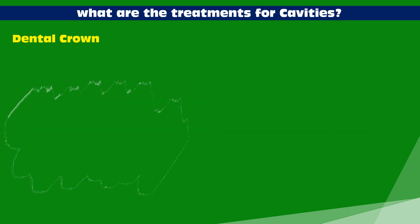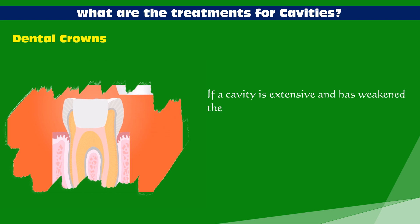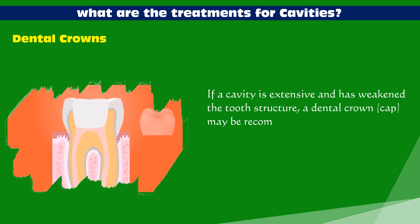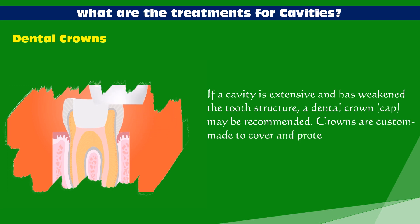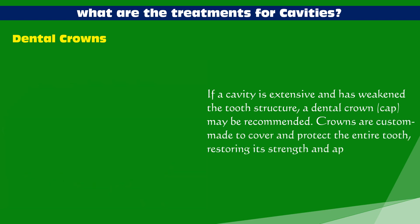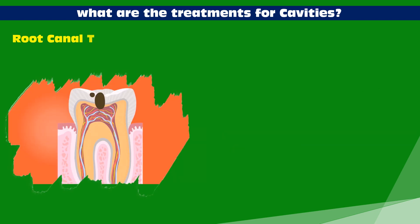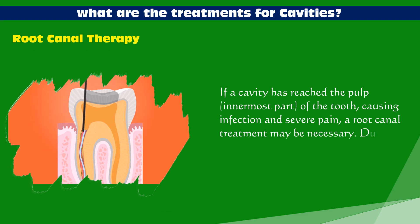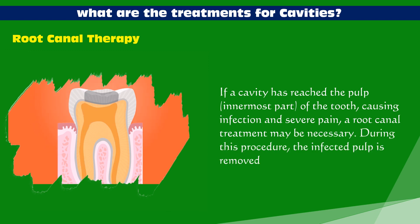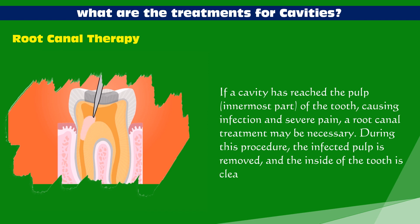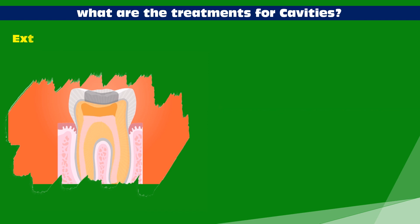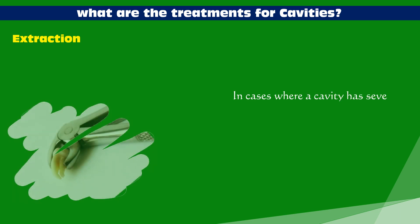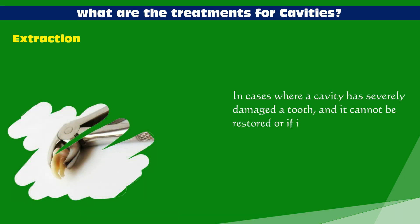Dental crowns: if a cavity is extensive and has weakened the tooth structure, a dental crown may be recommended. Crowns are custom made to cover and protect the entire tooth, restoring its strength and appearance. Root canal therapy: if a cavity has reached the pulp of the tooth, causing infection and severe pain, a root canal treatment may be necessary. During this procedure, the infected pulp is removed and the inside of the tooth is cleaned, filled, and sealed. Extraction: in cases where a cavity has severely damaged a tooth and it cannot be restored, or if it poses a risk to neighboring teeth, the tooth may need to be extracted.